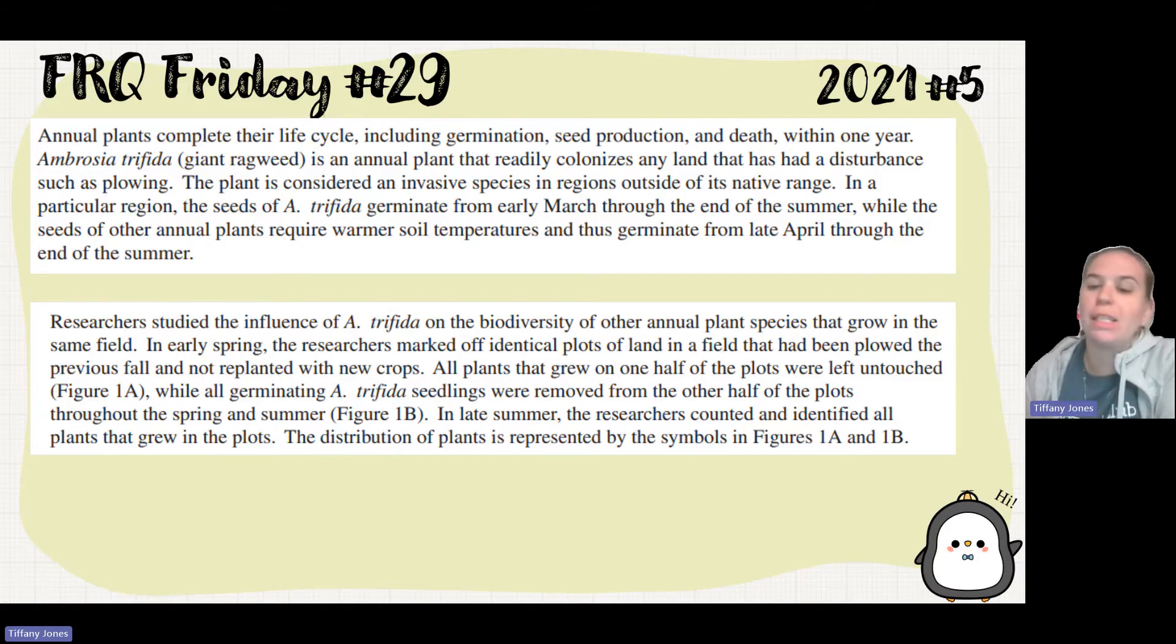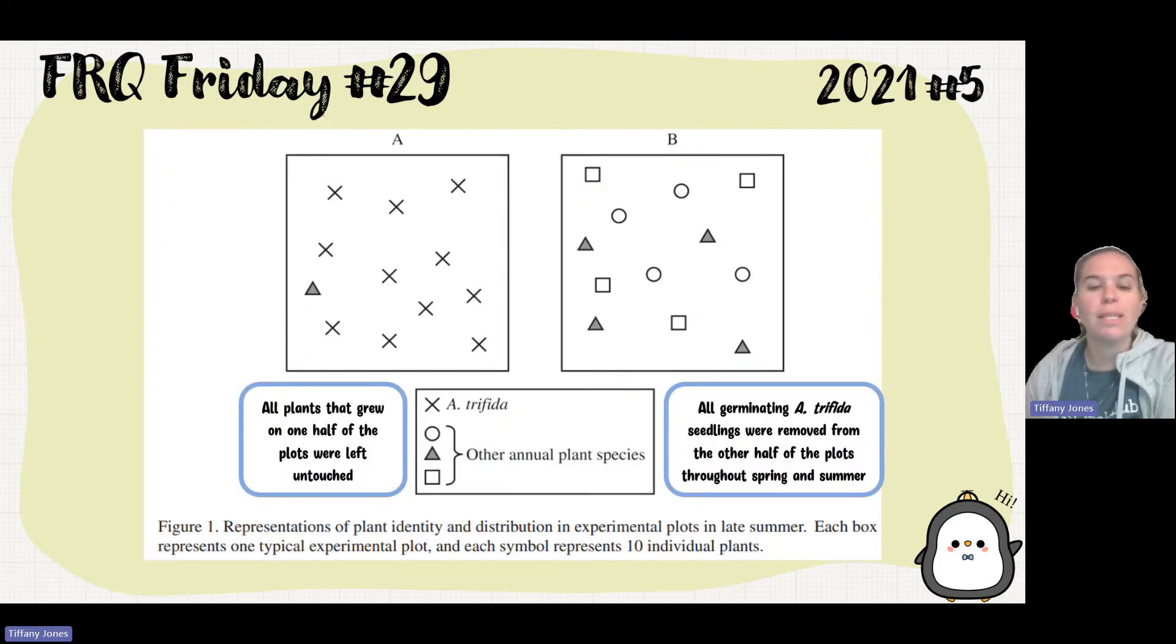The distribution of plants is represented by the symbols. We can see that we left it untouched on one half, and that led to the Trifida basically taking over because it's an invasive species, versus over here in part B, we removed the Trifida throughout the spring and summer, and so in late summer, we're not seeing those seedlings anymore.